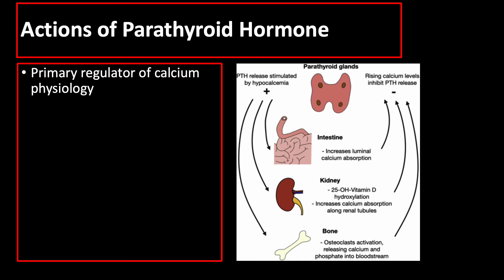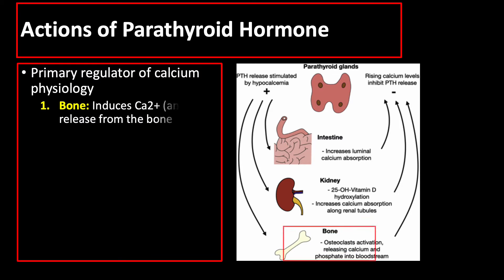The parathyroid gland is the primary regulator of calcium physiology in the body, and it is the primary hormone that protects against hypocalcemia. Parathyroid hormone acts directly on the bone, where it induces calcium and phosphate release from the bone to the blood circulation.